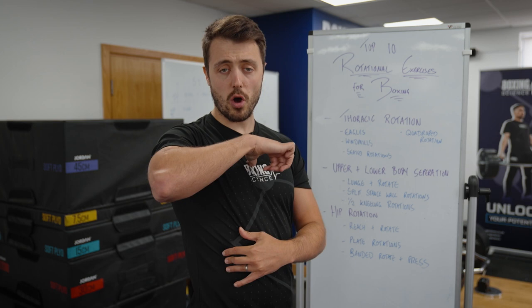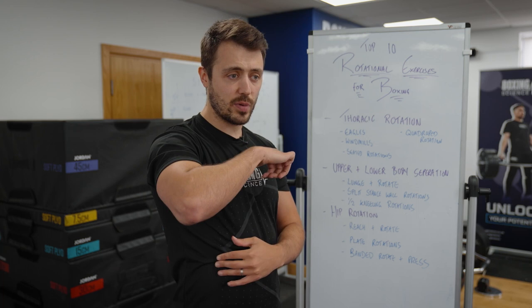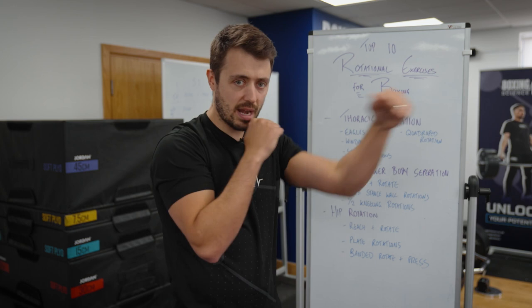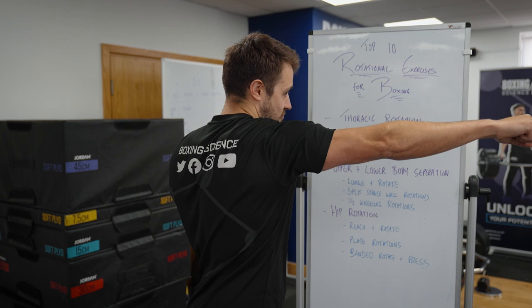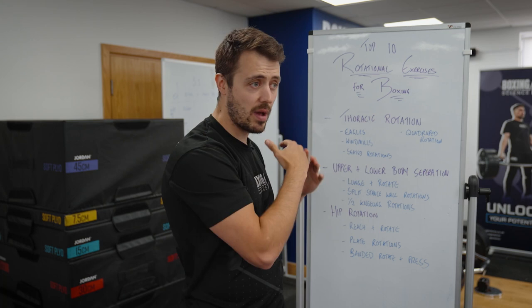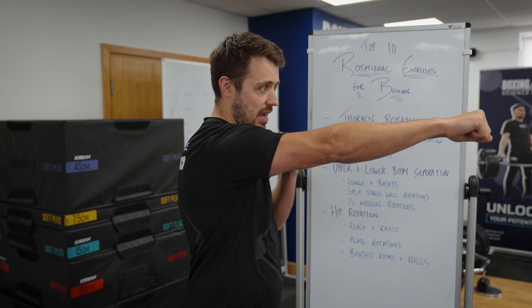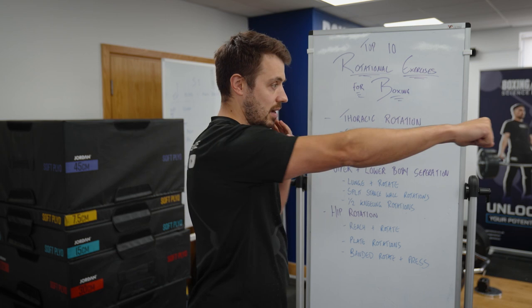The reason we want to improve thoracic rotation is that boxers are quite anterior dominant in the shoulders from punching high volumes, so they end up being quite tight, which affects thoracic rotation. When throwing a punch we want to improve thoracic rotation to increase the range of straight shots and increase the rotational power into bent arm shots. With increased thoracic rotation we get more range on the punch, which means more power — increasing that length-tension relationship.